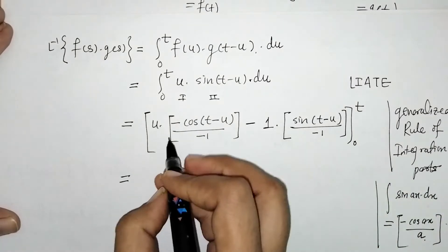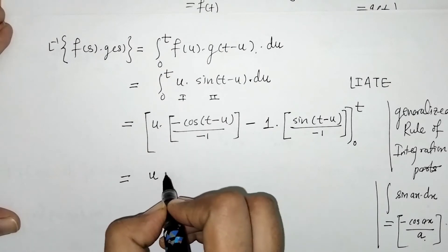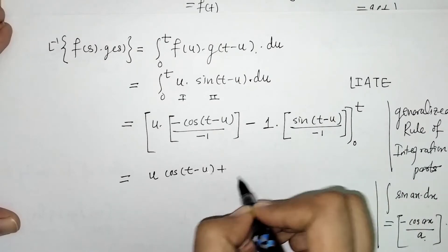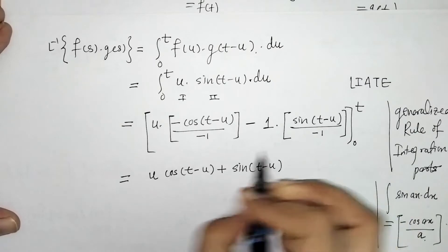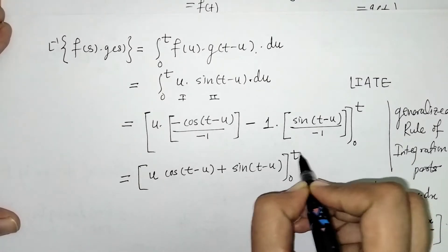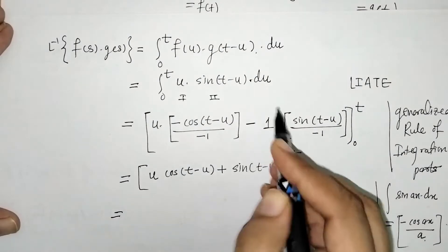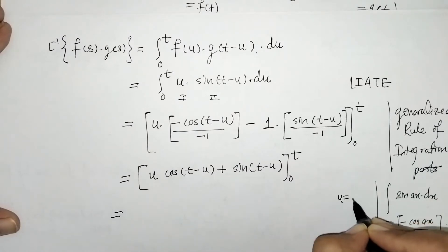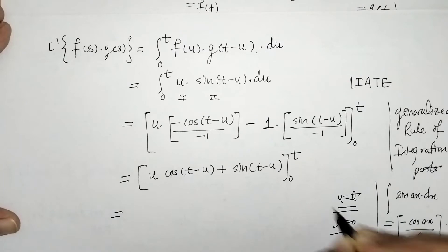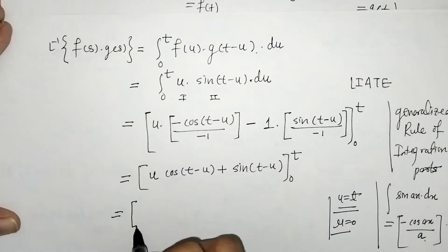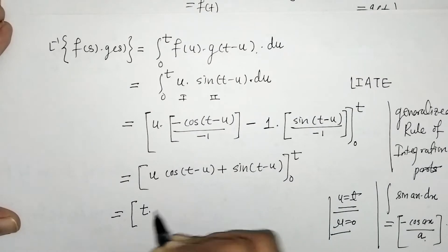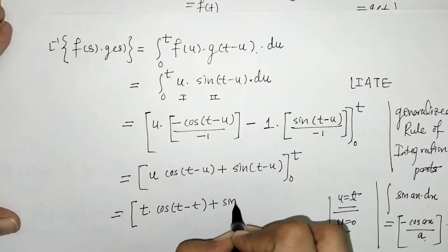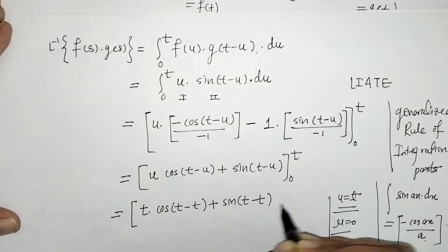After simplifying the signs (minus minus becomes plus), we have: [u·cos(t - u) + sin(t - u)] from 0 to t. Now we apply the limits. For the upper limit u = t: t·cos(t - t) + sin(t - t) = t·cos(0) + sin(0).